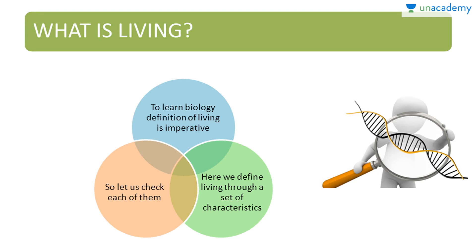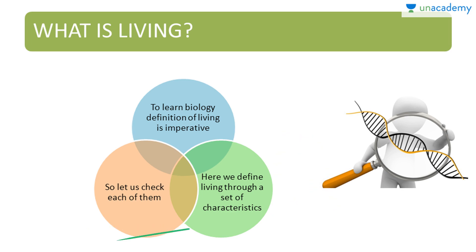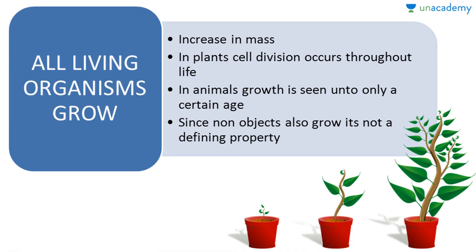Here we define living through a set of characteristics, so let us check each of them out. All living organisms grow. Growth is defined as increase in mass. In plants, cell division occurs throughout their life, but in animals growth is seen only up to a certain age.